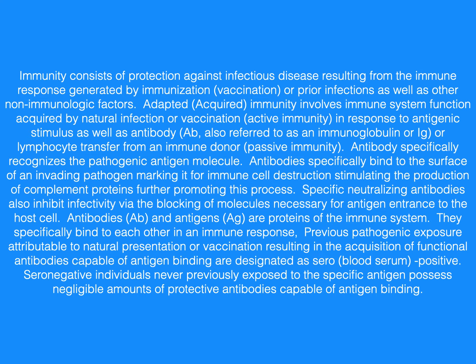Antibodies and antigens are proteins of the immune system. They specifically bind to each other in an immune response. Previous pathogenic exposure attributable to natural presentation or vaccination, resulting in the acquisition of functional antibodies capable of antigen binding, are designated as seropositive. Seronegative individuals never previously exposed to the specific antigen possess negligible amounts of protective antibodies capable of antigen binding.